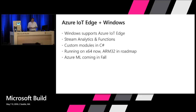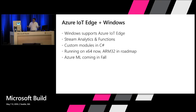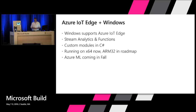Windows does support Azure IoT Edge. There are a handful of modules available now to configure and choose from; more will come as people write their own and put them on the Azure Marketplace. Right now on Windows, this runs on x64, and ARM 32 is absolutely in the roadmap. This fall, Azure ML will be added to that — and that's what we'll demo next.